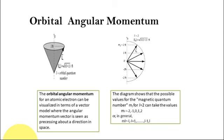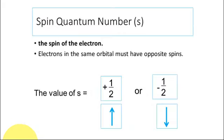In Bohr's model, it was suggested that angular momentum equals n·h/2π. The improvisation in the vector atom model gives the orbital angular momentum as the square root of L(L+1) times h/2π. Spin is also relevant here — an electron has parallel and anti-parallel spins, with spin quantum number values of plus one-half and minus one-half.